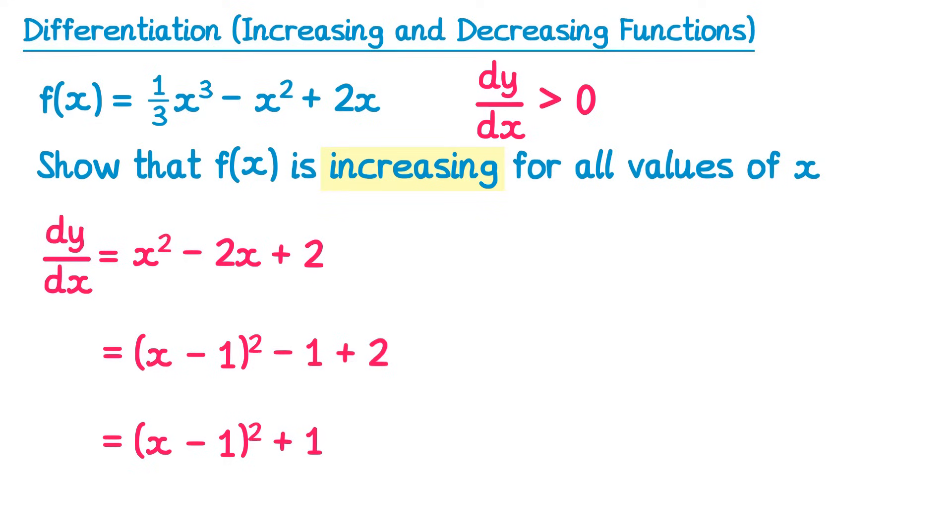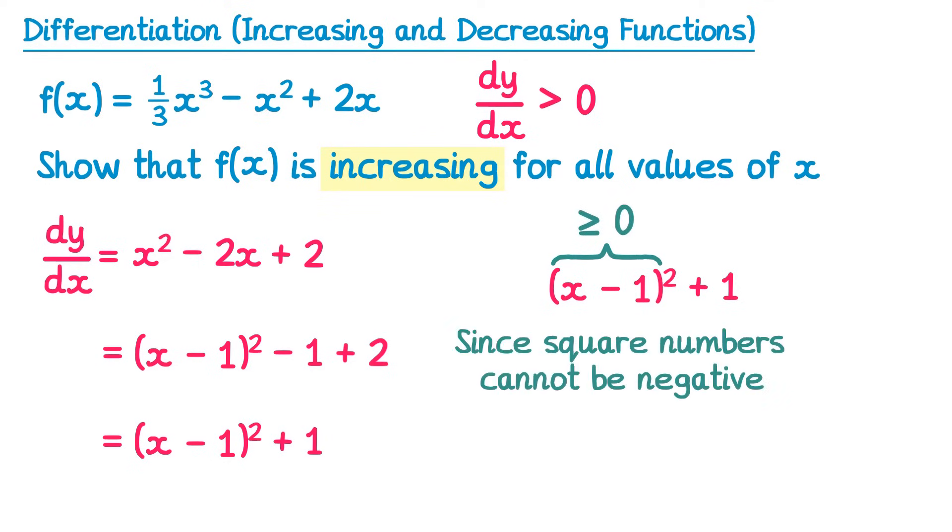Now it's in this form, we can show that it's always positive. This first bit is just a bracket squared. So whatever value of x we substitute in here, this must be greater than or equal to 0, since square numbers can't be negative. Even if x was negative 5, we'd get negative 6, and then you square that and it becomes positive. So the lowest value this bracket squared could be is 0, and then we add 1 to that. So the lowest value dy/dx could be is 1, which is greater than 0, therefore f(x) is increasing.